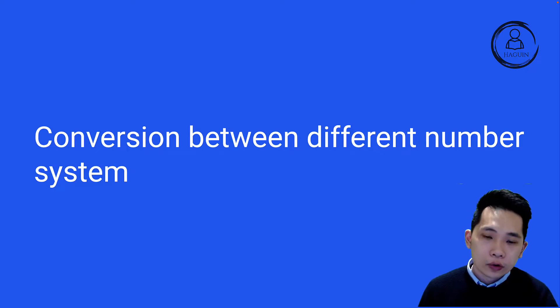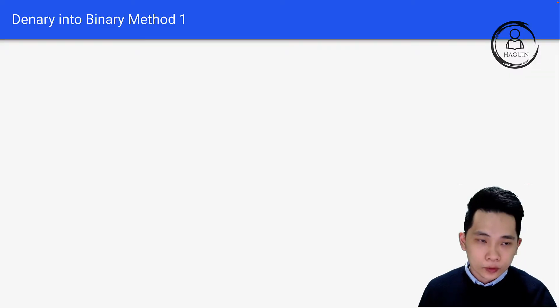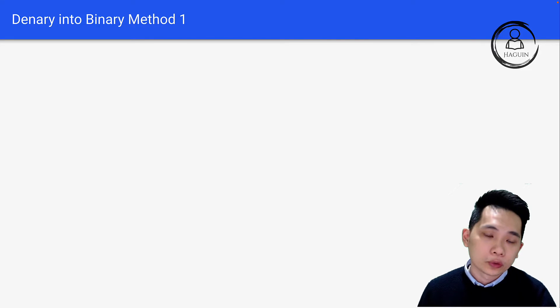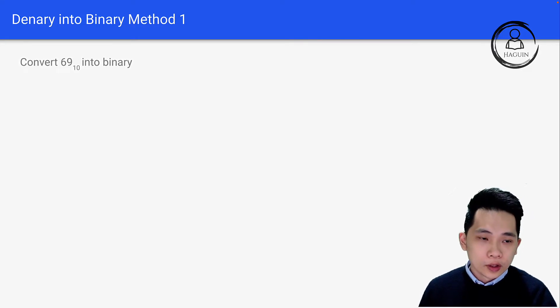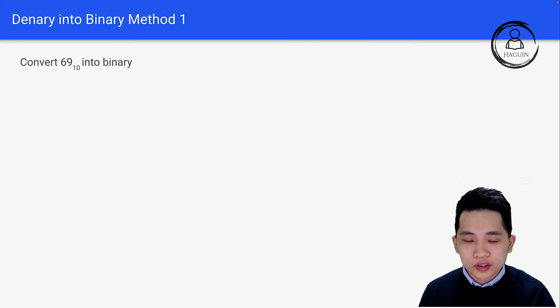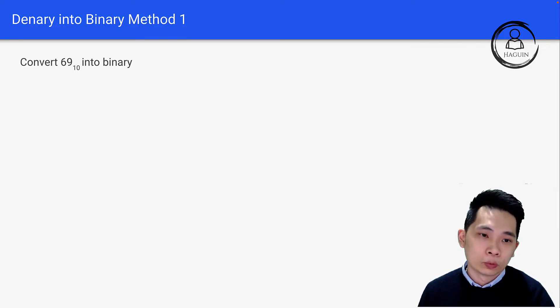Let's look into conversion between different number systems. First, let's look into denary into binary using Method 1. How do you convert 69 into binary? 69 in denary form into binary number.